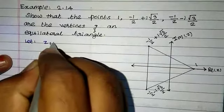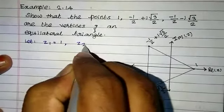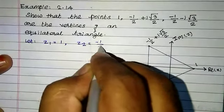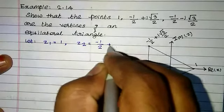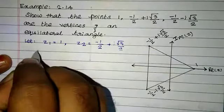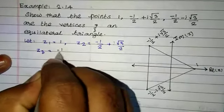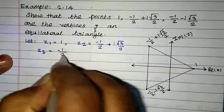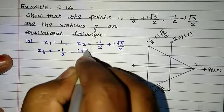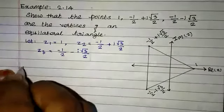Let z1 equal to 1, z2 equal to minus 1 by 2 plus i root 3 by 2, and z3 equal to minus 1 by 2 minus i root 3 by 2.